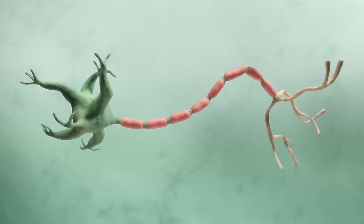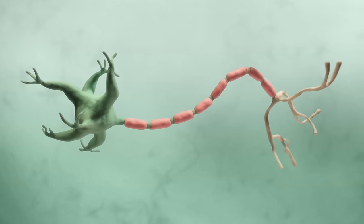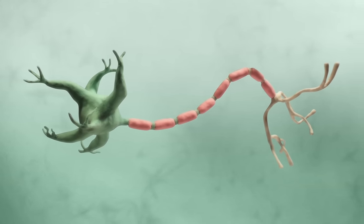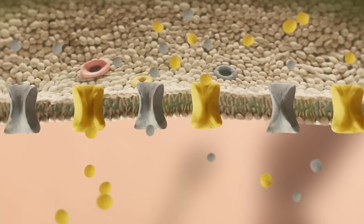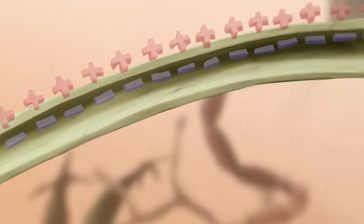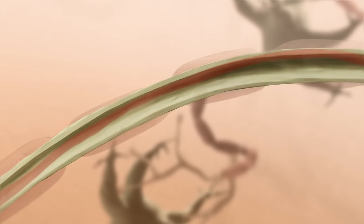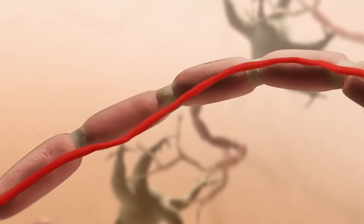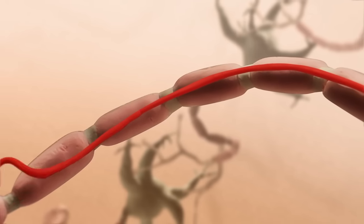In the last module, we took first steps towards understanding the electrical properties of individual neurons. We learned how electrical forces and diffusion give rise to membrane potentials, and we learned how cells can generate and propagate signals called action potentials, or spikes, along the membrane.